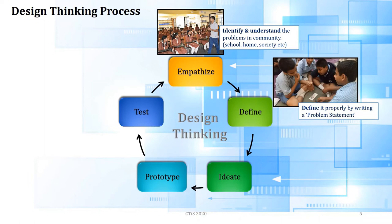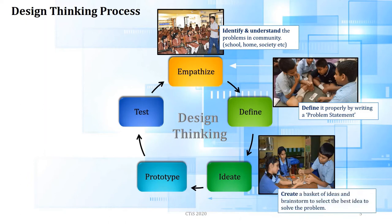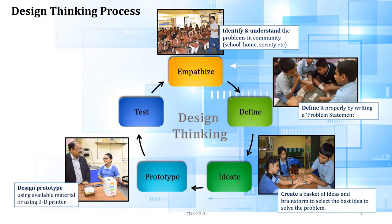After empathize comes the define stage. Here the most important thing is to articulate your problem — writing down the problem statement clearly is very important to keep students focused. Then comes ideation, where children come up with different ideas. The rule is no idea is a bad idea, and this is where innovation takes place. When a basket of ideas is ready, children pick the best one and use prototyping tools to design a prototype.